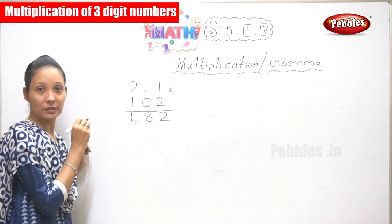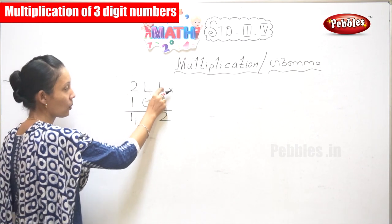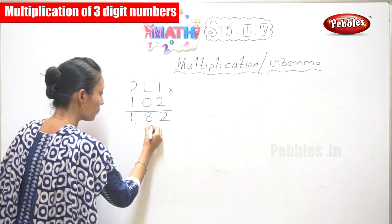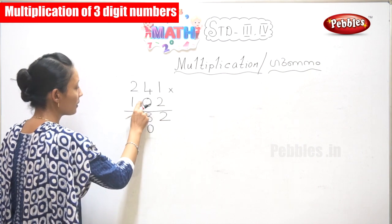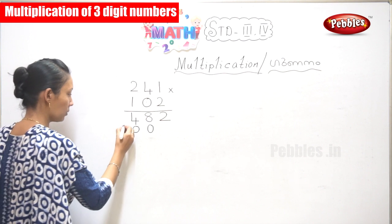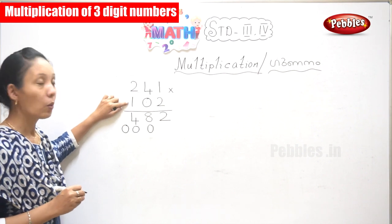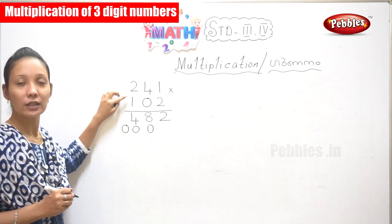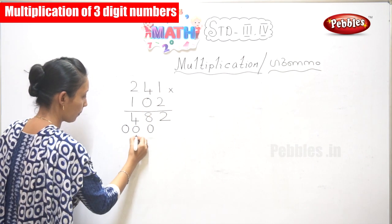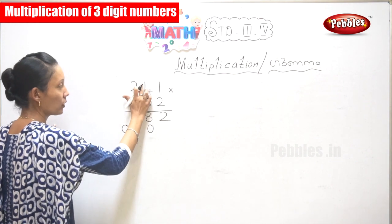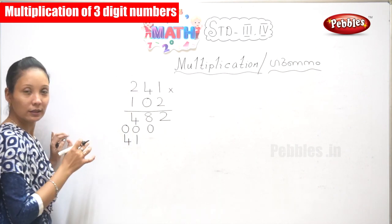Next, you need to take the 0 and multiply these 3 numbers. 0 into 1 is 0. 0 into 4 is 0. 0 into 2 is 0. That is your next line. Your third step: multiply by 1. 1 times 1 is 1. 1 times 4 is 4. 1 times 2 is 2.